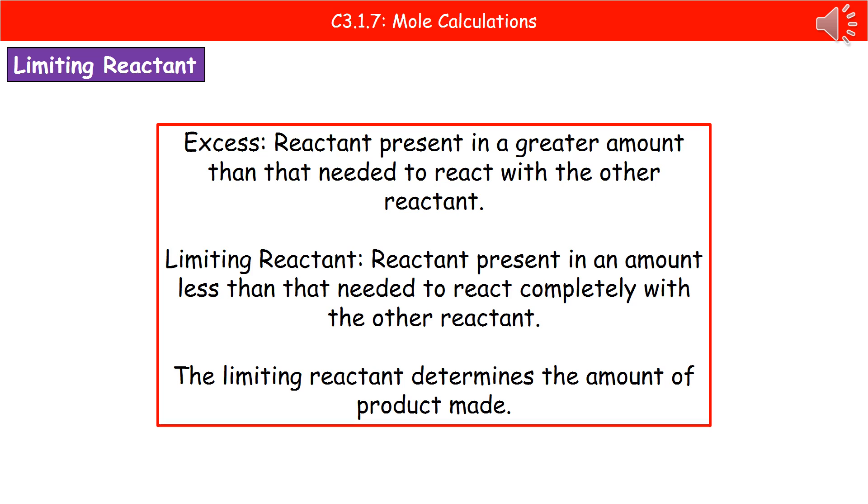The limiting reactant is the one that's present in an amount less than is needed to react completely. In terms of determining how much product we make, the limiting reactant is going to be the deciding factor. If you only have a very small amount of limiting reactant, you will only make a very small amount of product. If you double the amount of limiting reactant, you will double the amount of product.